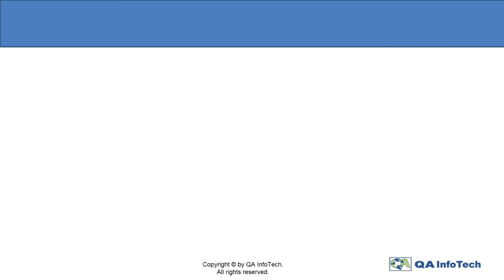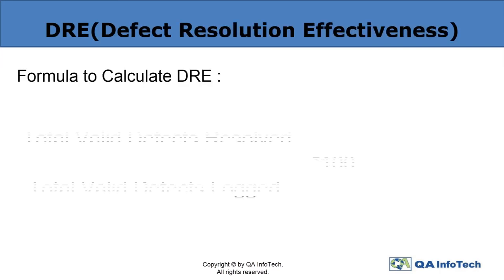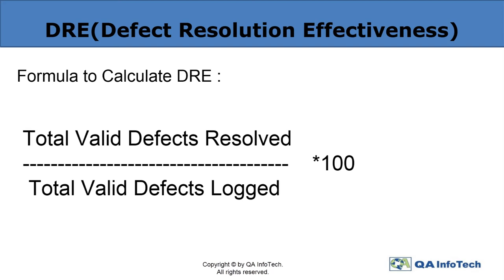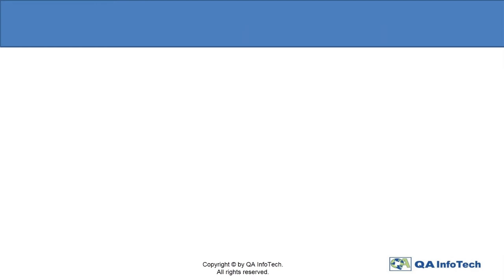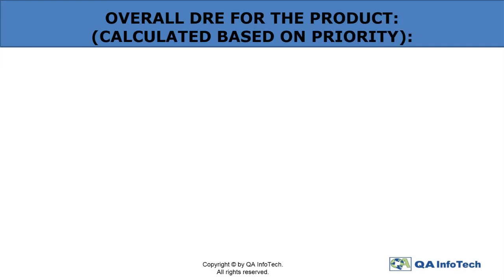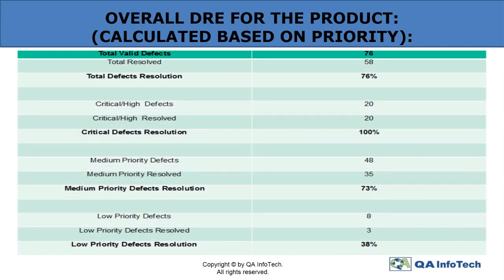Defect Resolution Effectiveness (DRE) is a measure to detect bugs prior to the release of the product. It is calculated by dividing the valid defects resolved by the valid defects logged, multiplied by 100. Based on priority, the defect resolution is calculated for low, medium, and critical defects, thereon calculating the DRE for the whole product. A result of 76% implies the total DRE, chalking out defects to understand the total efficiency of the product.